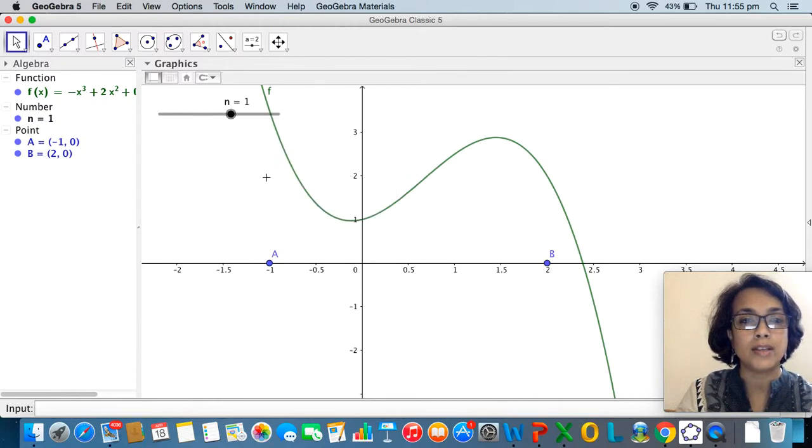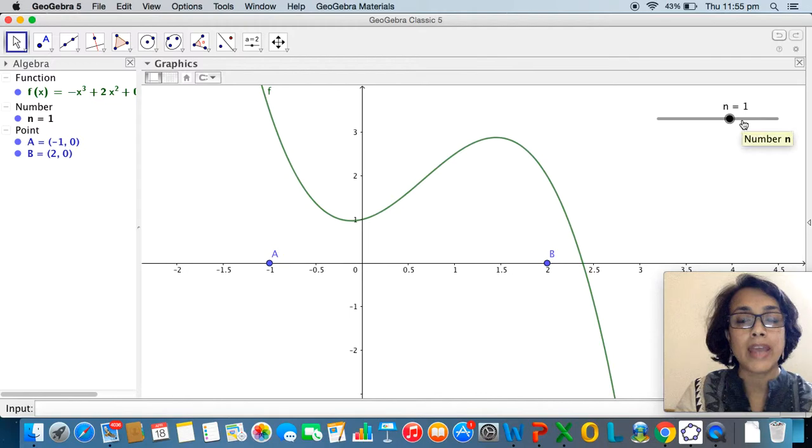I will right click and untick the fixed object option and shift the slider to the right hand side so that it is more comfortable to handle. The slider n is going to represent the number of rectangles which I'm going to place under the curve between the points minus 1 to 2 on the x axis.